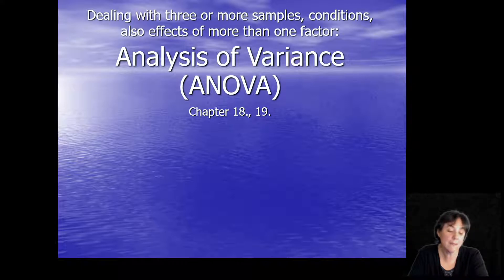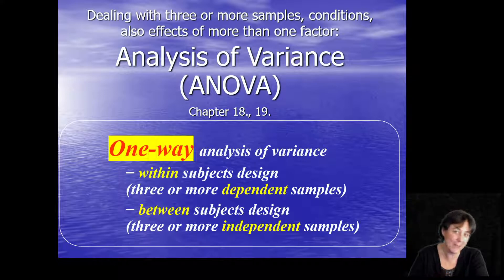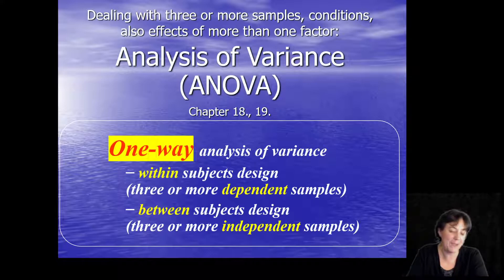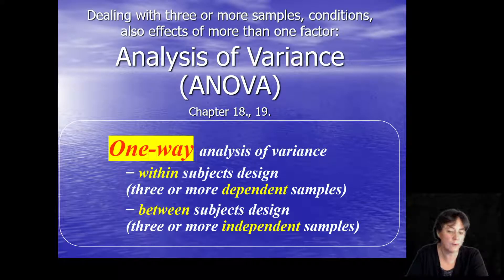There are two main types I want to show you today: the one-way ANOVA and the two-way ANOVA. First we will deal with the one-way ANOVA, which tests only a single factor — a single grouping variable, or it can also be conditions.